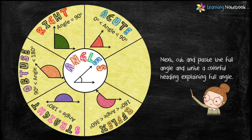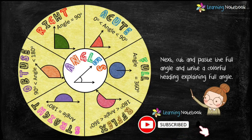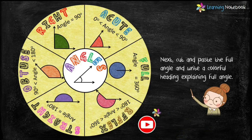Now let's paste the last type of angle, which is full angle, and write a colorful heading along with its property that full angle equals 360 degrees. Our math wheel is now complete and this is how we can make a math wheel showing types of angles. Thanks for watching, bye bye, see you in the next video.